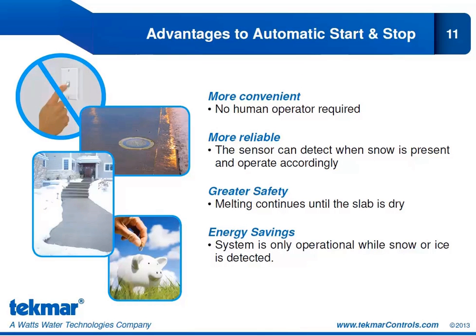What are the advantages of having a fully automatic start and stop? It's definitely more convenient — no human operator is required. The system automatically starts when needed and automatically stops when the moisture is gone. It's more reliable because it operates at the first signs of moisture and runs until there are no more signs. That also translates into greater safety, as we continue the melt cycle until the slab is dry, avoiding the chance of a refreeze. And one of the most compelling reasons for most people is energy savings — we're only operating when snow or ice is detected, for exactly the right amount of time.